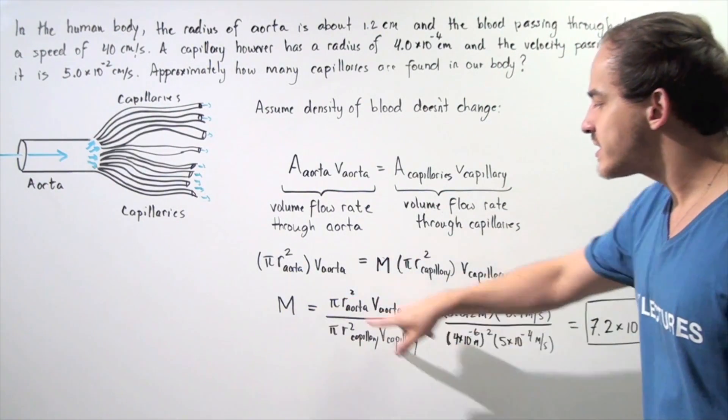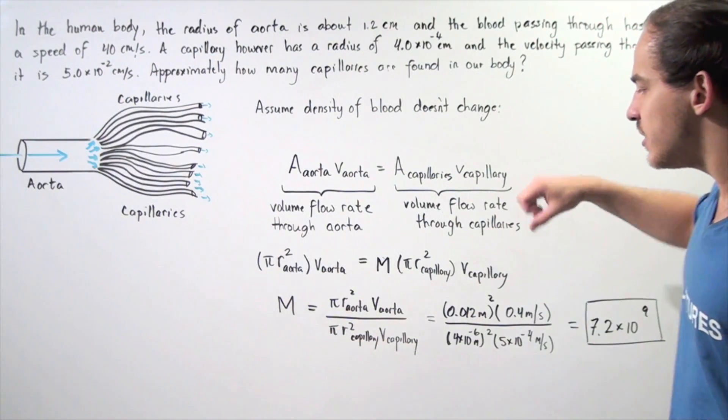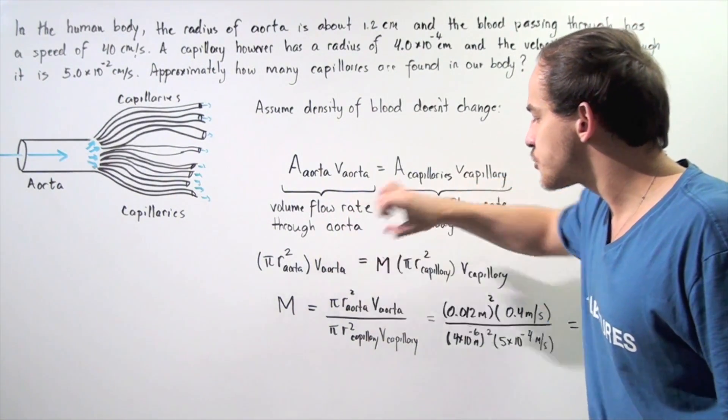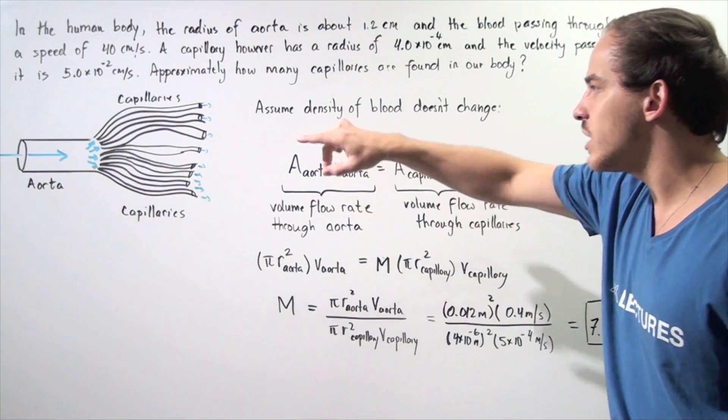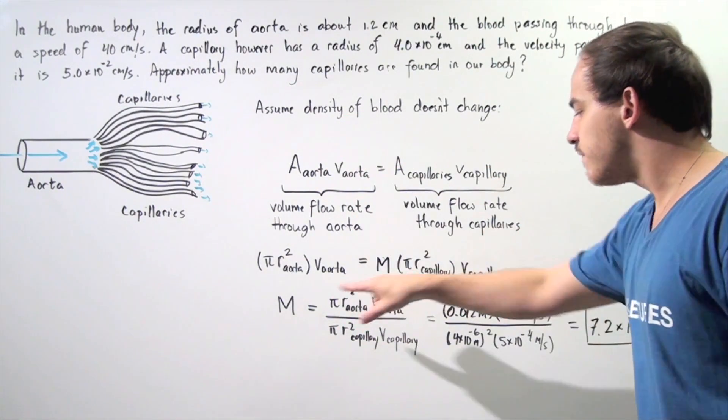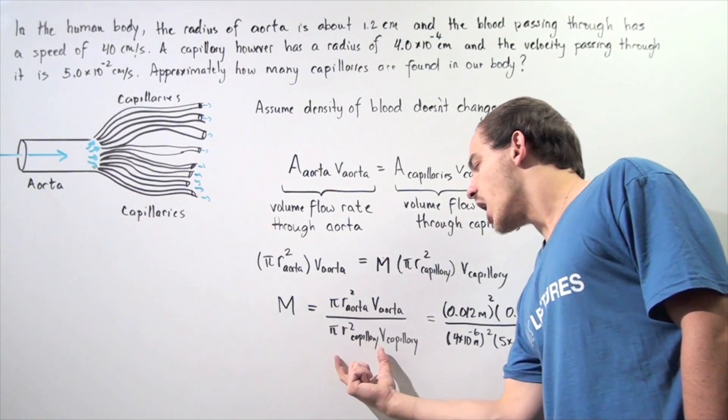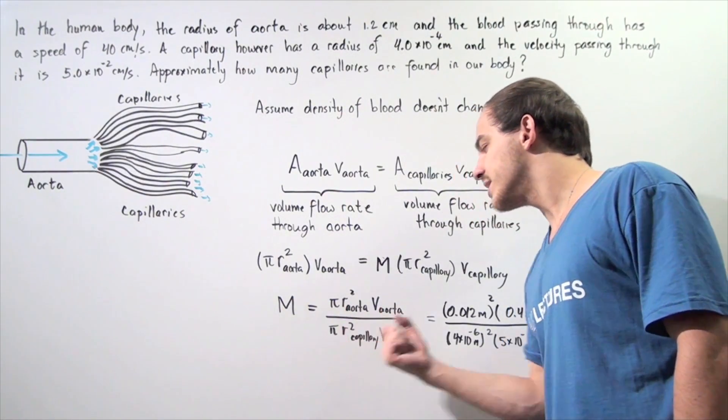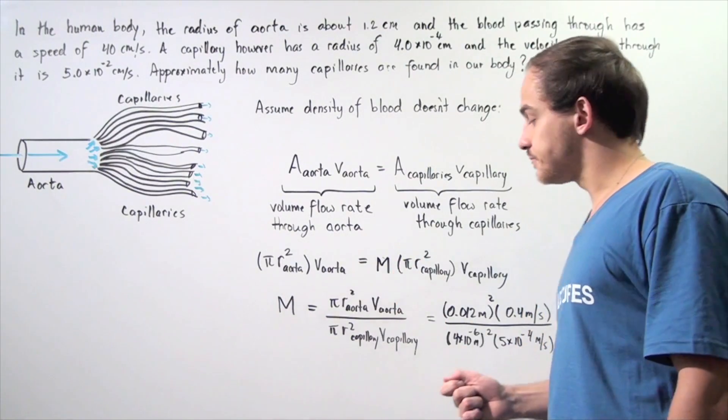M is equal to, notice the π's cancel, so we're simply left with the product of the radius of the aorta squared and the velocity through the aorta, divided by the product of our velocity of the capillary and the radius of the capillary squared.